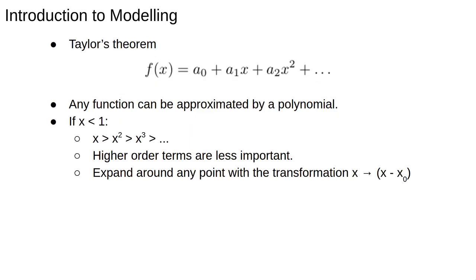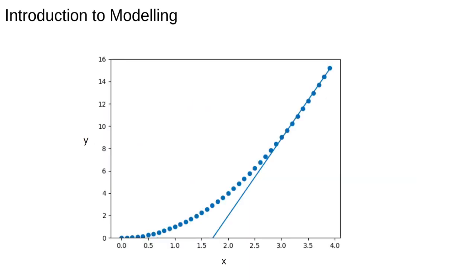This is because of Taylor's theorem. Taylor's theorem says that any function can be expanded as a polynomial series. f(x) = a0 + a1x + a2x² + ... for some constants a0, a1, a2. If x < 1, then x > x² > x³ and so on. This means that the higher order terms are small and can be neglected, and the function can be approximated using only the first couple of terms.